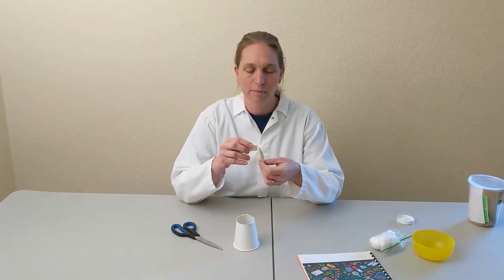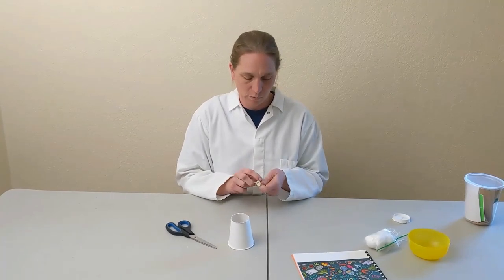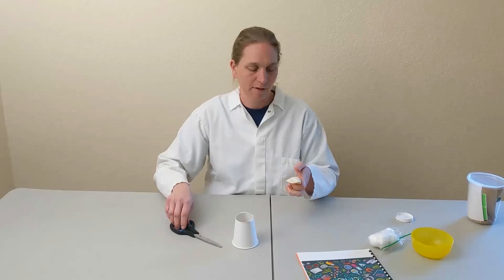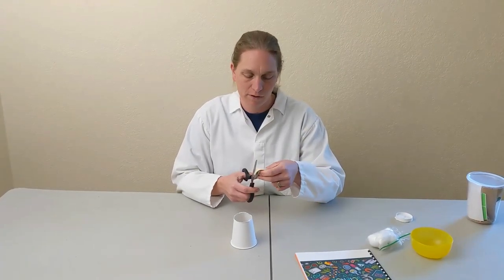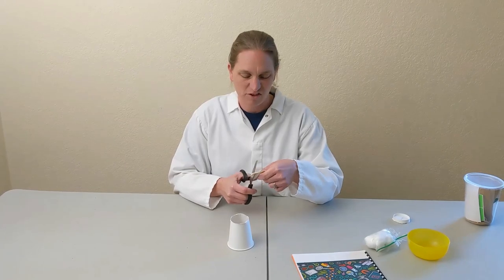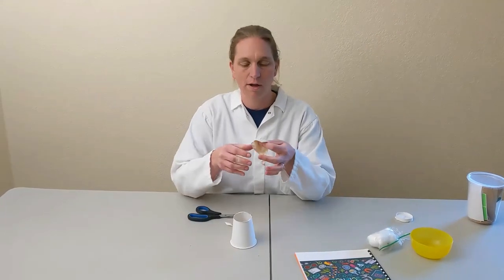Next we're going to take our balloon and we're going to tie a knot on one end just like you would if you'd already blown it up, except we're not going to blow it up. Then we're going to cut off this part. Doesn't really matter how much. Now you have a hole on the wrong end.